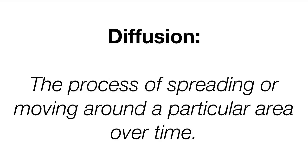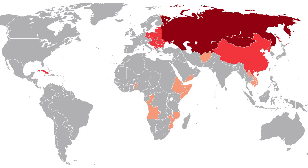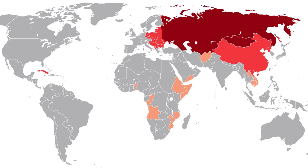Diffusion is the process of spreading or moving around a particular area over time. Diffusion can be features or trends, and there are actually six types of diffusion: hearth, relocation, expansion, hierarchical, contagious, and stimulus diffusion. For example, this map shows the expansion of communism over time to the lighter areas on the map.